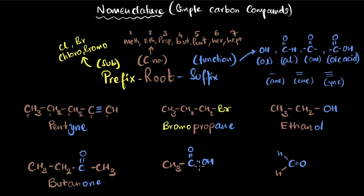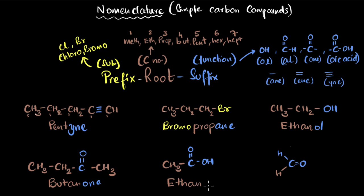Moving to the next example: again no substituent groups, so no prefix. I go directly to the root word — I have two carbons, so it's 'eth.' The functional group is a carboxylic acid, which takes the suffix 'oic acid.' I write 'ethane,' delete the 'e,' and write 'oic acid' to get ethanoic acid.